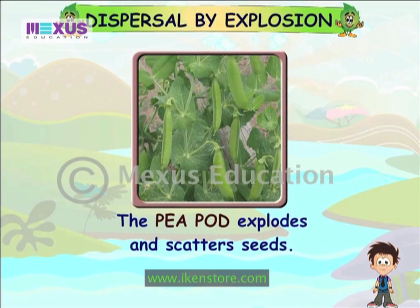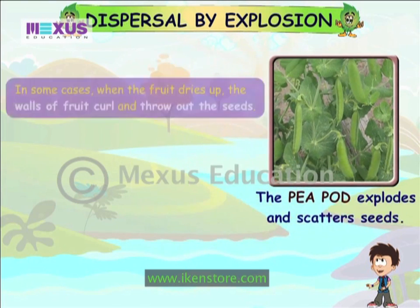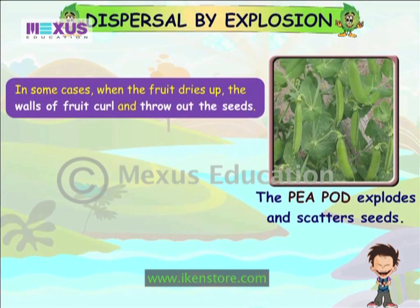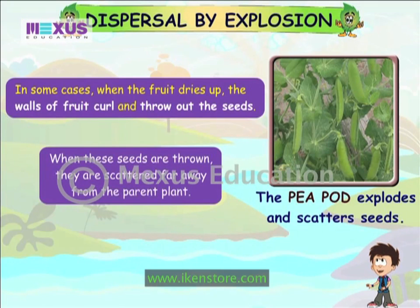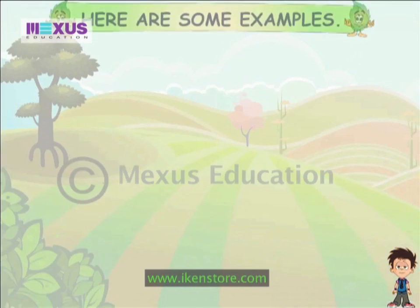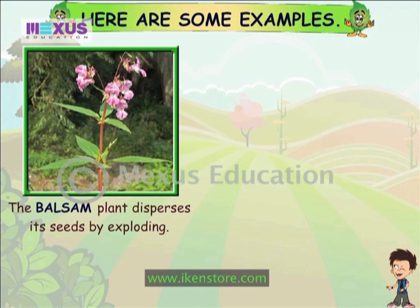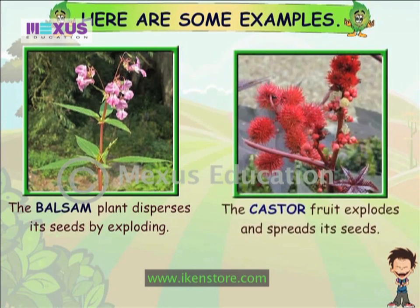Dispersal by explosion. In some cases, when the fruit dries up, the walls of the fruit curl and throw out the seeds. When these seeds are thrown, they are scattered far away from the parent plant. Here are some examples: the balsam plant disperses its seeds by exploding, and the castor fruit explodes and spreads its seeds.